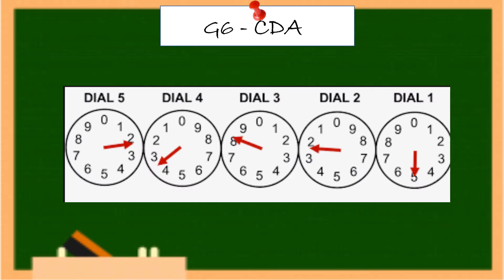If the pointer appears to be exactly on a number, check the dial to the right to find the correct reading. If the dial on the right has passed zero, use the number the pointer is pointing to on the dial you are reading. If the dial has not passed zero, use the smaller number on the dial you are reading.